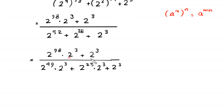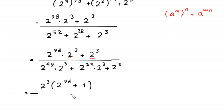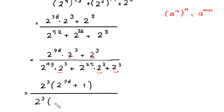From the numerator we can factor out 2 cubed, giving 2 cubed as a common factor in brackets, leaving 2 to the power 98 plus 1. From the denominator we can also factor out 2 cubed, giving 2 cubed as a common factor in brackets, leaving 2 to the power 49 plus 2 to the power 25 plus 1.